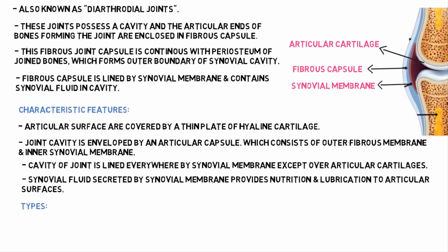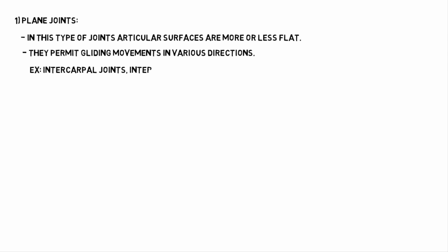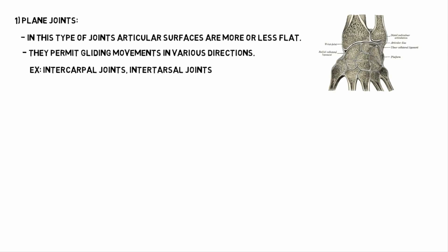Coming to the types of synovial joints — there are seven types. The first one is the plane joint. In this type of joint, the articular surfaces are more or less flat. They permit gliding movements in various directions. Examples are intercarpal joints and intertarsal joints.